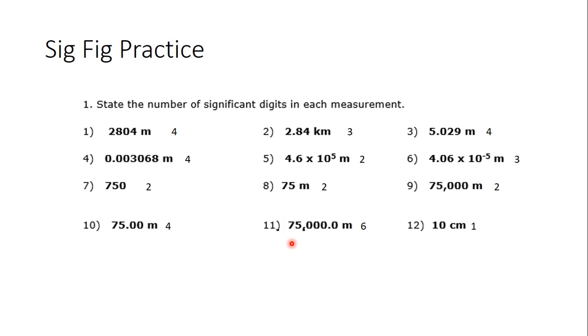While 10 and 11, we do have a decimal point now, so that makes all these zeros significant. While 12, again, no decimal point, so only one number is significant.